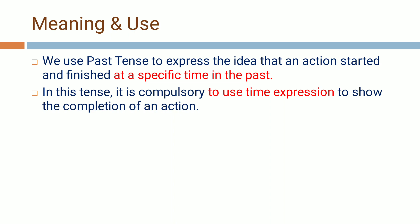Now, when do we use past tense? We use past tense to show an event or an action which started, completed, and got finished — it got completed at a specific time in the past. So in order to show the specific time in the past, we have to use some time expressions or timing words, without which past tense cannot be formed grammatically correct.